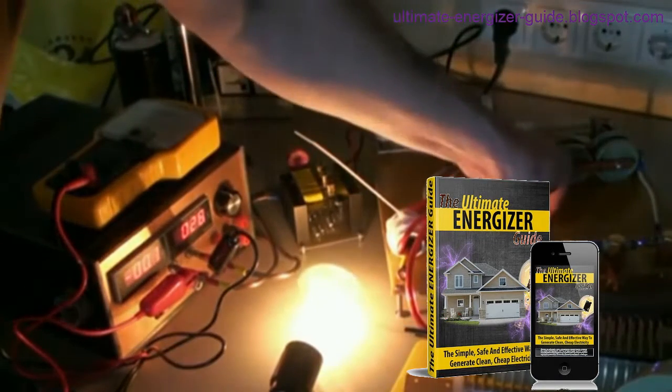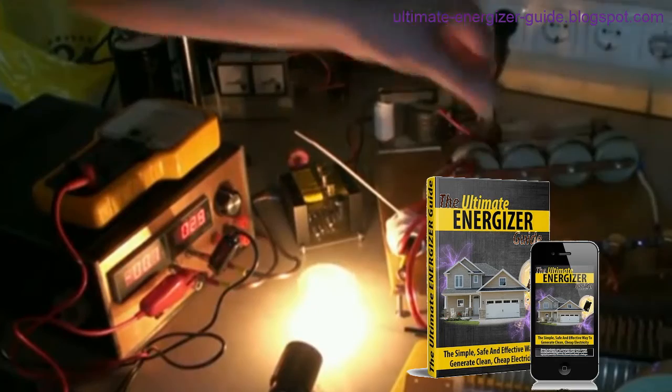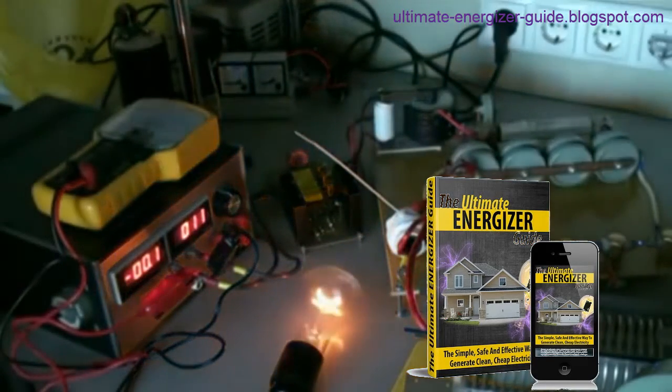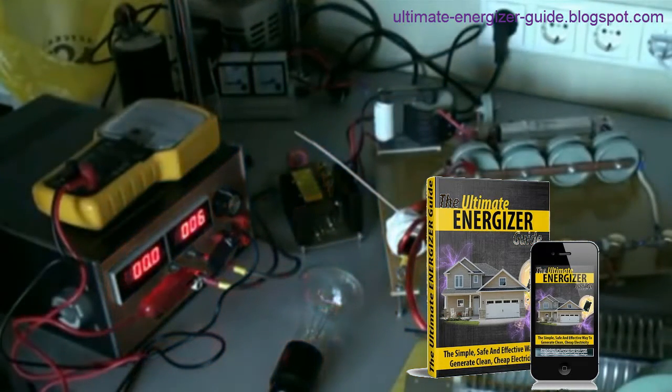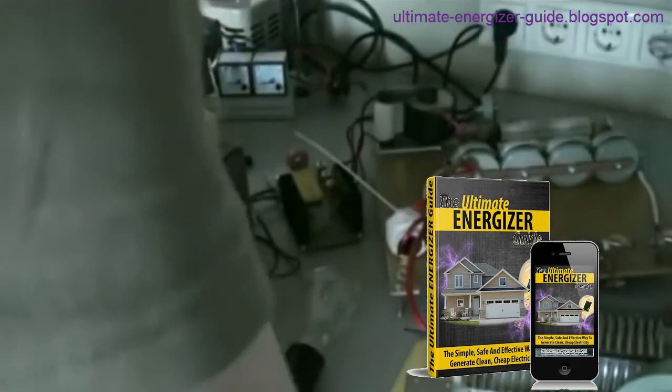Then a power source is supplied to the system from the grid to activate it. Here the output energy, electricity, is many times greater than the input energy, meaning free energy is produced.